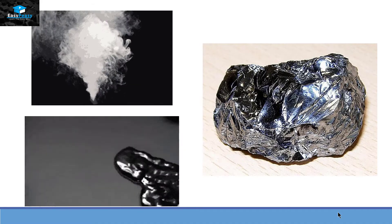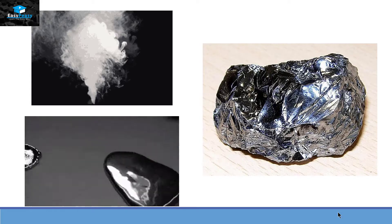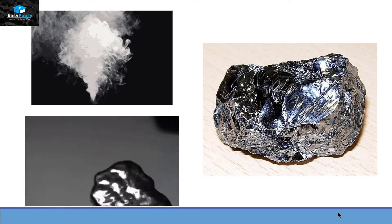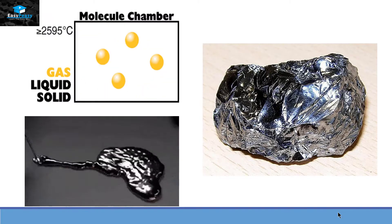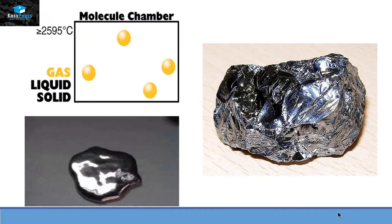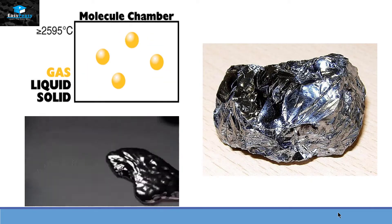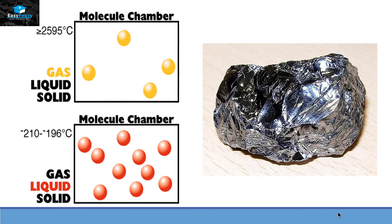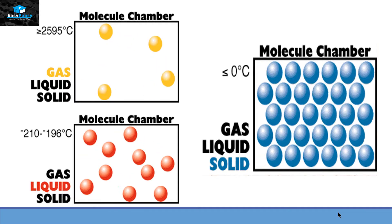If those particles are far away then they will be in gas state. If they are a little bit near to each other then that will be a liquid state, and if they are pretty much close to each other then they will be in solid state.